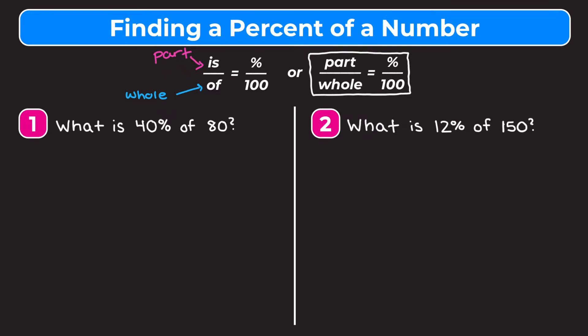Let's learn how to use these proportions by looking at example one. Example one says: what is 40% of 80? We have to figure out what is the part, the whole, and the percent. In the beginning it says 'what is,' which is associated with the word 'is,' so that is our part and because we're solving for it, that's going to be X.